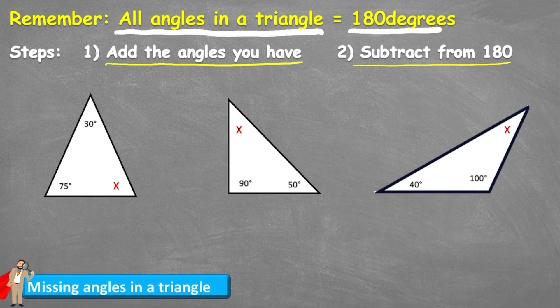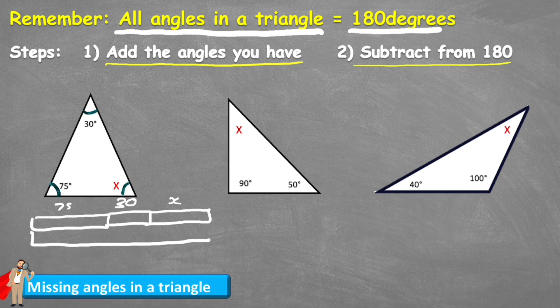So let's have a look at this first one together then and we can see that we have this angle down here of 75 degrees and the top angle of 30 degrees and we're looking for this angle that's marked X. So we have 75, we also have 30 but we're missing this angle here that we're going to call X. But we know that all the total equals 180.